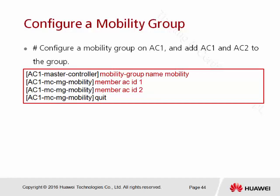Now go back to AC one again and continue the configuration on the master controller. For the master controller, we also allow giving a name to the mobility group. Inside here I'm going to use the name 'mobility'. After entering the mobility group name, the next step is to bind the ACs into the mobility group — telling it who belongs to this group. I use the commands 'member AC ID 1' and 'member AC ID 2'.